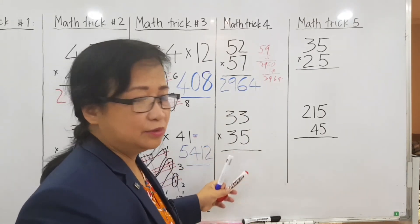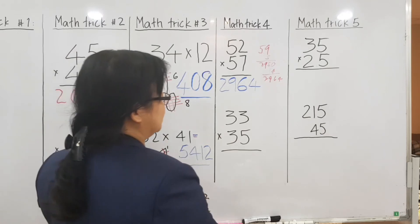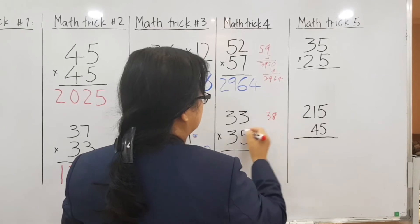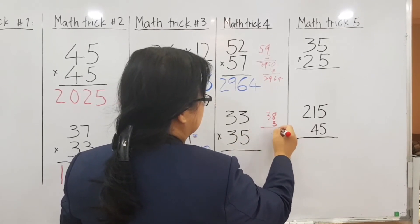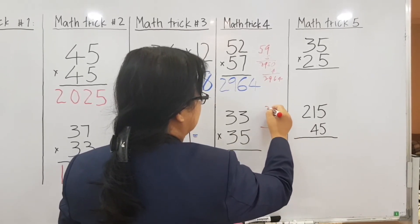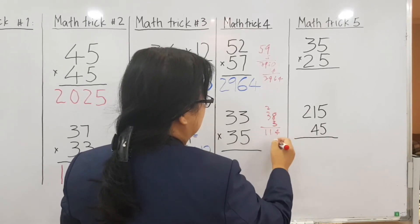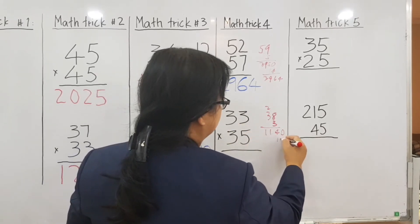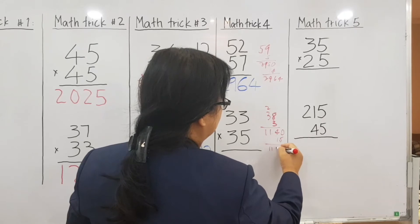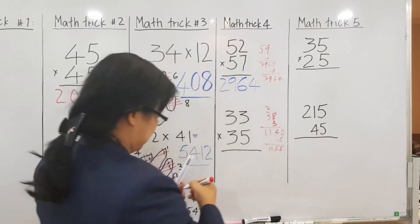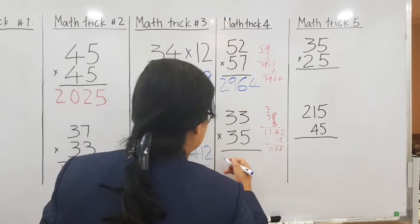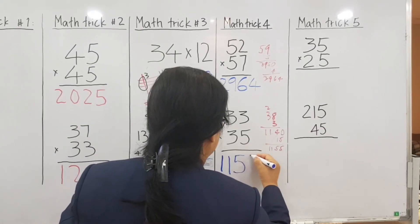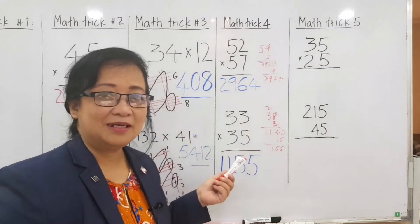Sample number 2. We have 33 plus 5 is equal to 38. Multiply by 3. You have to add 0, and then 5 times 3 is equal to 15. Therefore, the answer is 1, 1, 5, 5. So the final answer is 1,155. Madali lang, di ba?